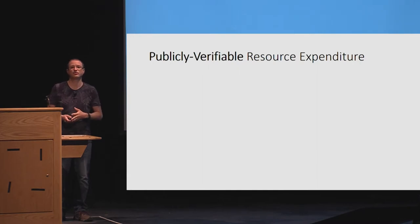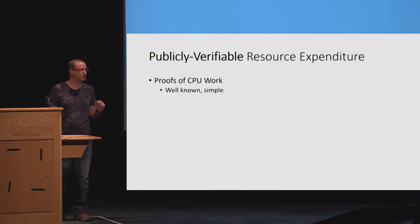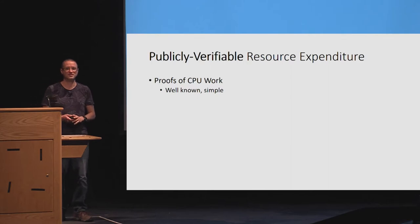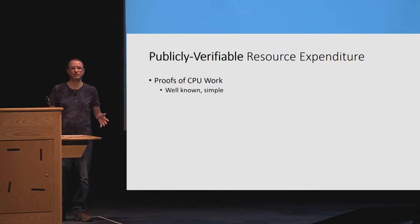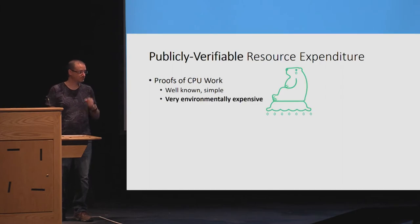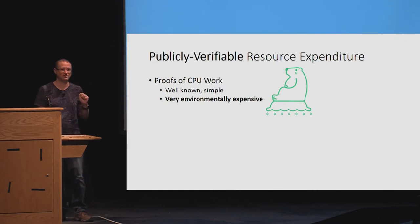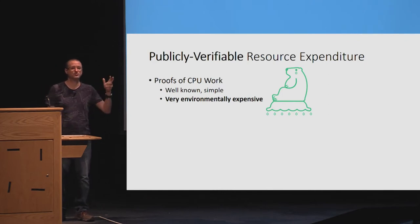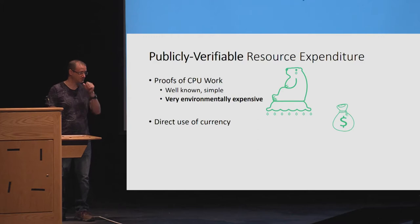So what kinds of publicly verifiable resources can we check? One well-known option, used in many cryptocurrencies but known from way before, is proofs of work. These are very simple, easy to do, and people have implemented them for many years. But they have a big problem: they're extremely expensive environmentally. Bitcoin's usage is now consuming as much electricity as a medium-sized country. So we don't want to use proofs of work.